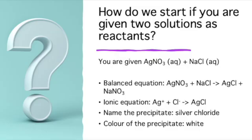Normally in SPM, they will ask you to calculate the heat of precipitation. So how do we start if you are given a pair of solutions as reactants? There are four steps you always have to remember. Number one: form a balanced chemical equation.